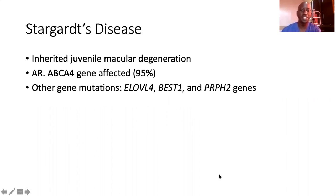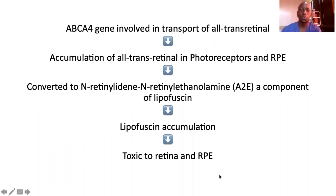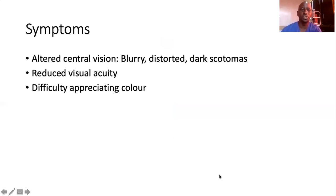Stargardt's disease is an inherited juvenile macular degeneration. It's an autosomal recessive disease mainly affecting the ABCA4 gene in 95% of cases. There are a few other genes involved, but ABCA4 is the most commonly affected. The cascade is essentially a mutation in the ABCA4 gene that results in an accumulation of all-trans-retinal, eventually leading to an accumulation of lipofuscin within the retina, which is toxic to the retinal photoreceptor cells and to the retinal pigment epithelium, causing destruction at that level.